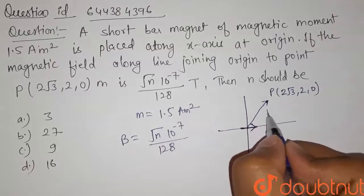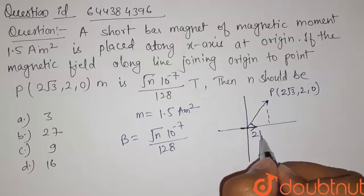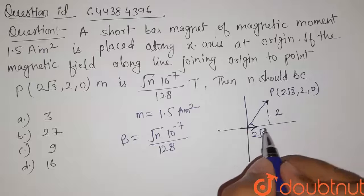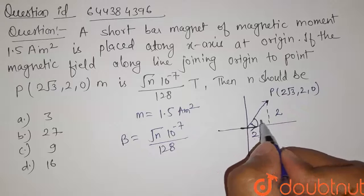So here this length is equals to 2√3 and this length is equals to 2, so we can find this angle theta.